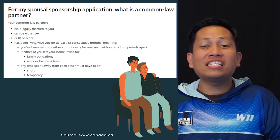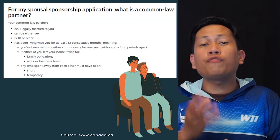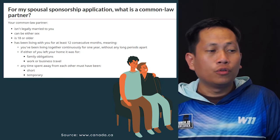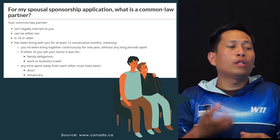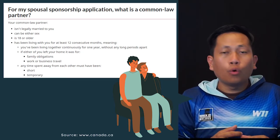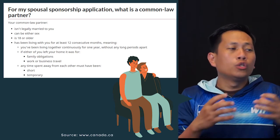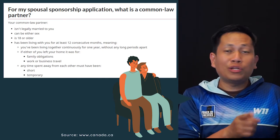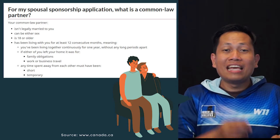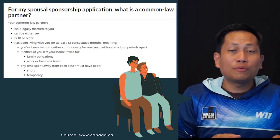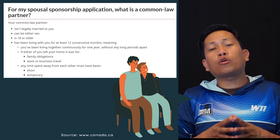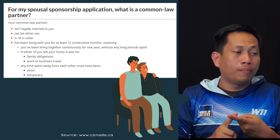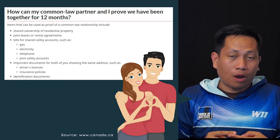Let's go to Canada.ca, which is the official website of Canada Immigration. How to prove that you are common law — that you have been together for 12 months? Those are questions you can find answered on Canada.ca. I will put the link in the description below. The first thing you need is shared ownership of a residential property.